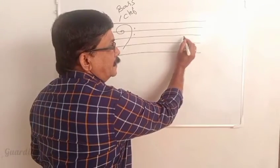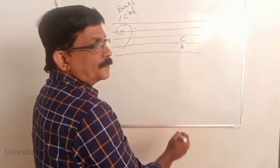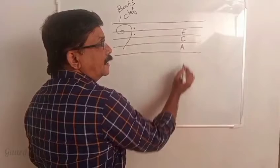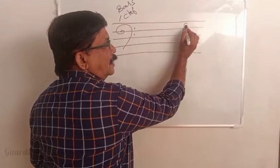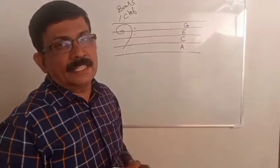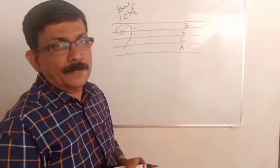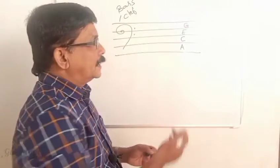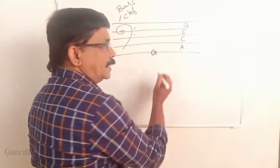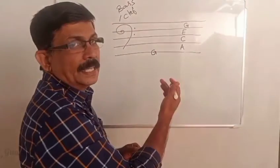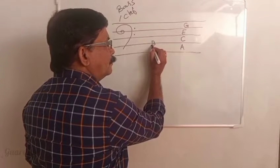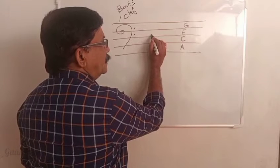The spaces on the staff are C, E, G, A. We can learn the notes the same way — G, A, C, E, G — and the same way we learn the treble clef, we learn the same letter names.